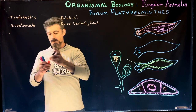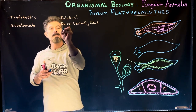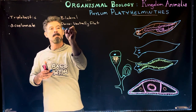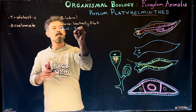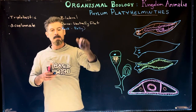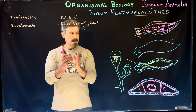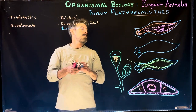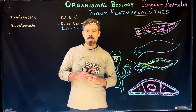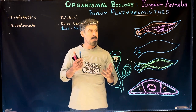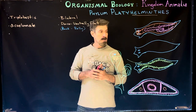Dorsal is our back and ventral is the belly. So from back to front, they are flattened. We'll talk about what advantage that has for this particular group, especially because of what they're lacking — what they don't actually have.